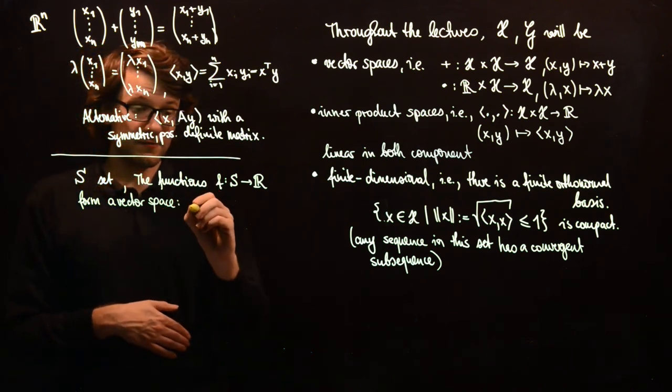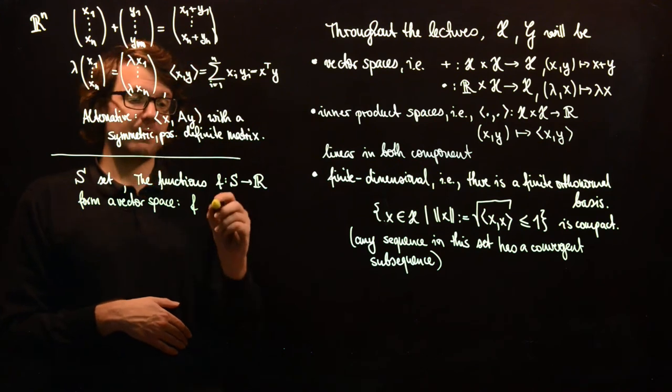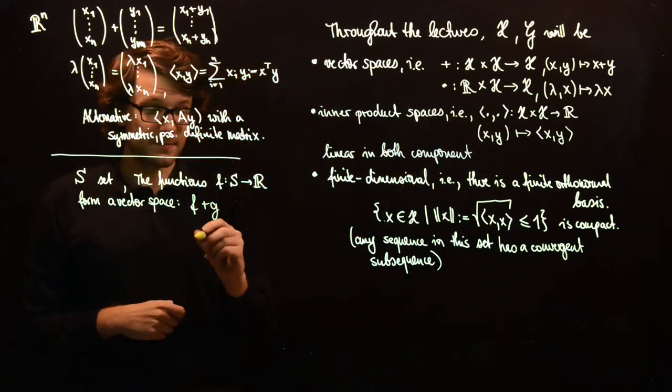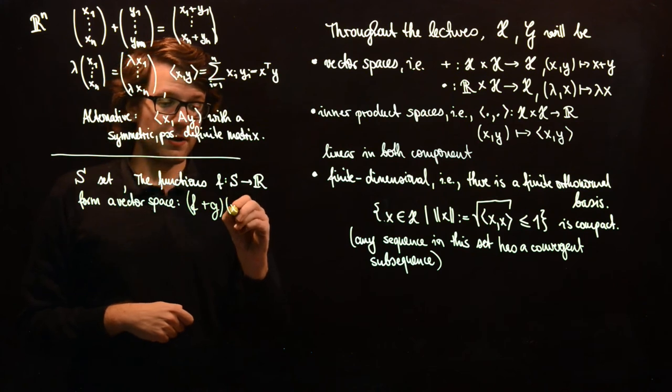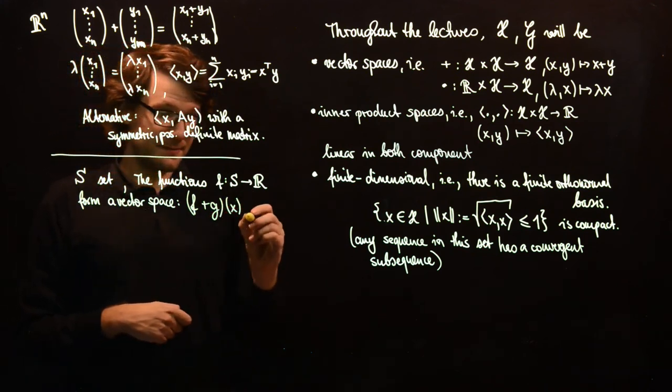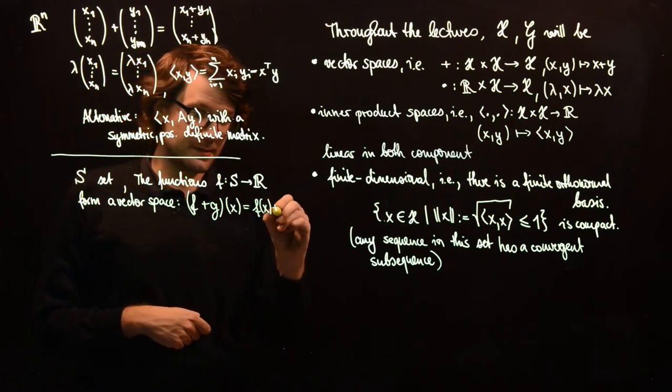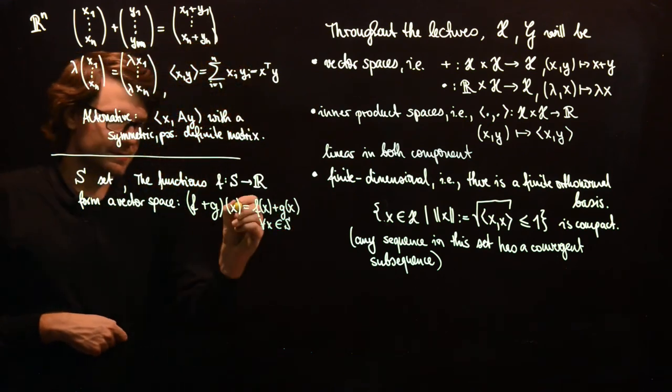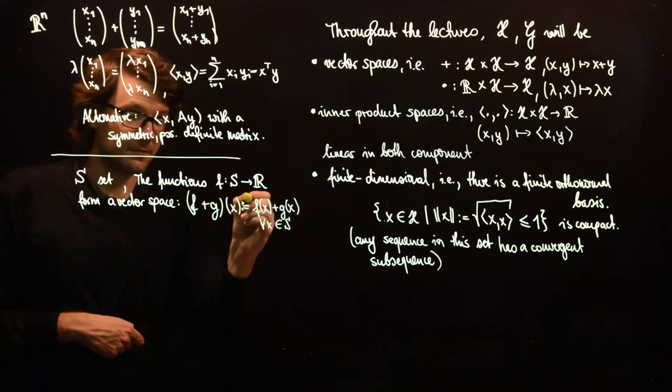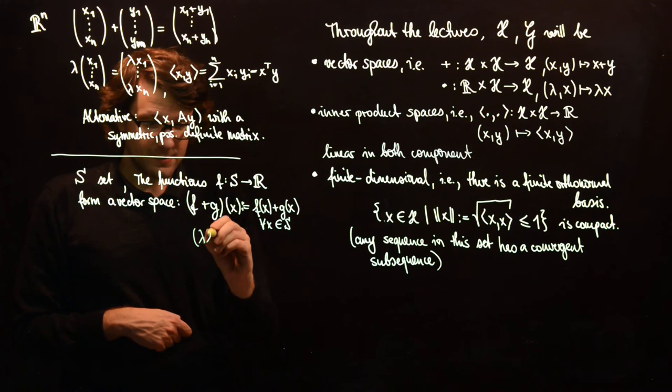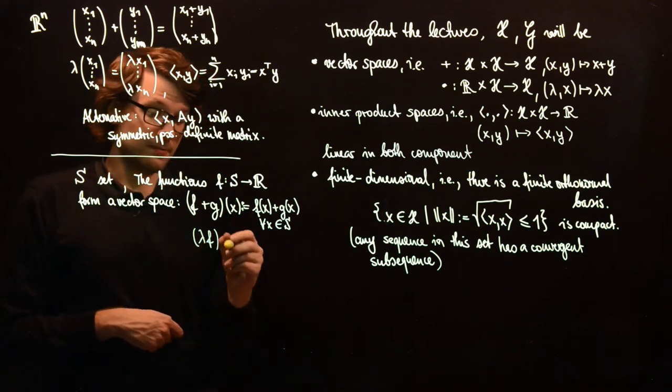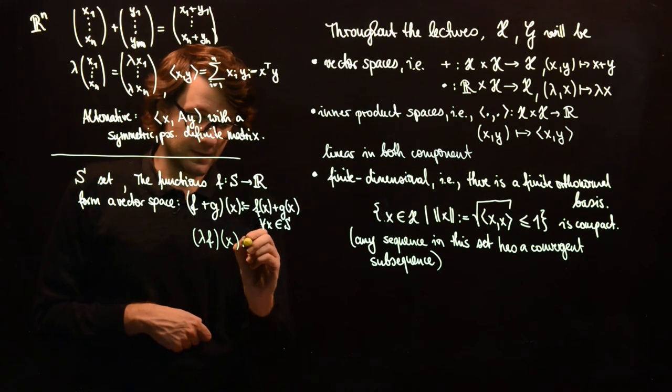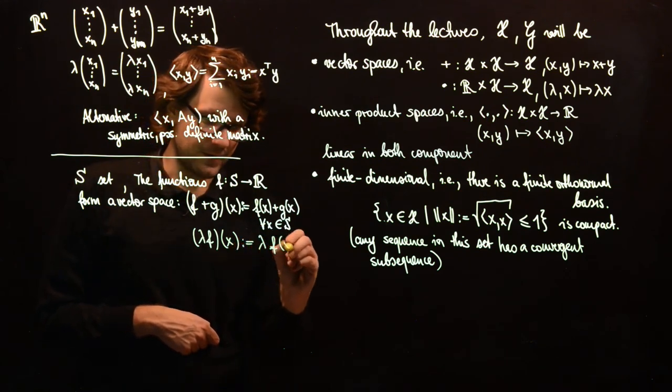What does this mean? So if you take a function F and a function G, then you want to define their sum, and this should be another function on S. So we have to define the function at a point X in S, and this should just be defined pointwise. And this is the definition of the sum of two functions, not very surprising.